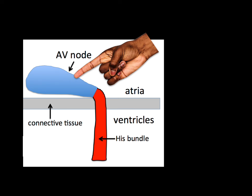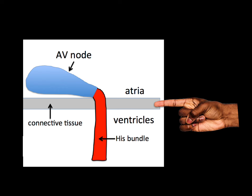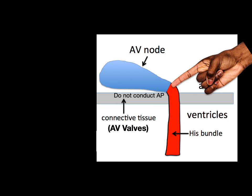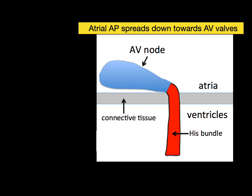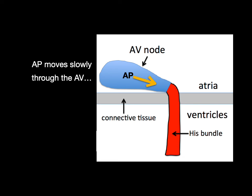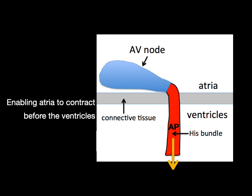In this schematic, there's the AV node on the atrial side, and the connective tissue separates the atria from the ventricles — that connective tissue being the AV valves like the tricuspid and mitral valves, which do not conduct an action potential. So the AV node is the only electrical link down into the ventricles. As the atrial action potential spreads toward the AV valves, the connective tissue stops it, but that action potential activates the AV node and slowly moves through it into the bundle of His. This slow movement is what enables the atria to contract before the ventricles.